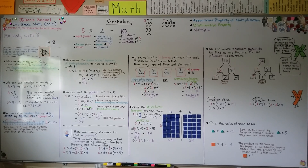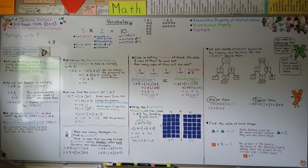In our next lesson, we're going to multiply with 9, and there are all kinds of tricks we can use. Remember: you can use a number line, you can use doubles, you can use the associative or distributive property, or even arrays to help you multiply with 8. And since 8 is an even number, it's easy to break it apart into smaller factors that we already know. I hope you're doing well, and I hope you have a really good day. I'll see you next time — bye!